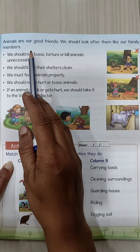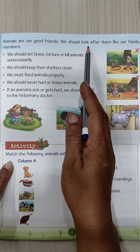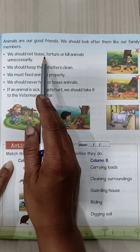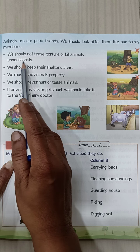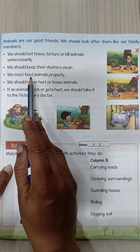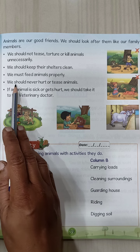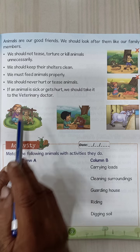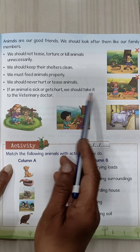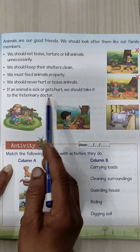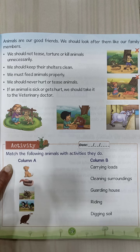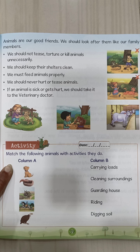Animals are our good friends, so we should look after them like our family members. We should not tease, torture, or kill animals unnecessarily. We should keep their shelter clean and feed animals properly. If any animal is sick or gets hurt, we should take it to the veterinary doctor. A veterinary doctor is a doctor who looks after animals.